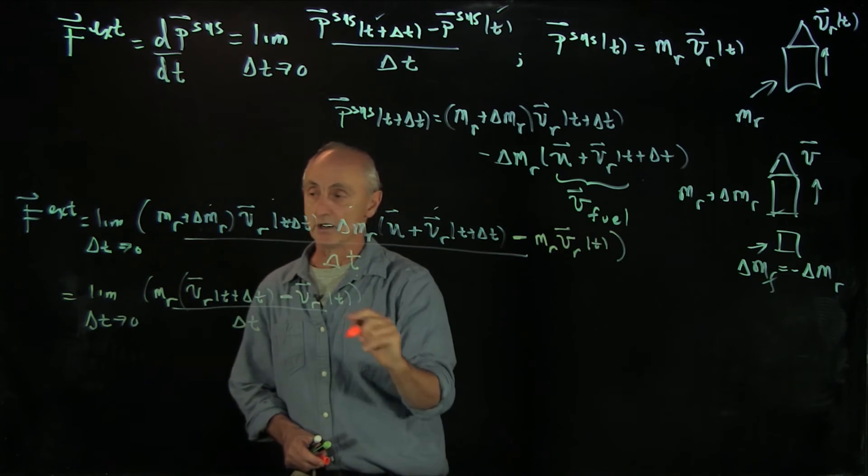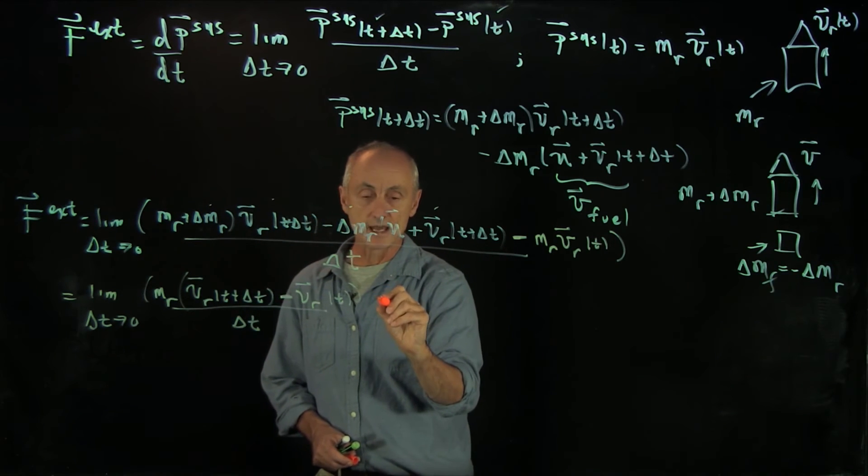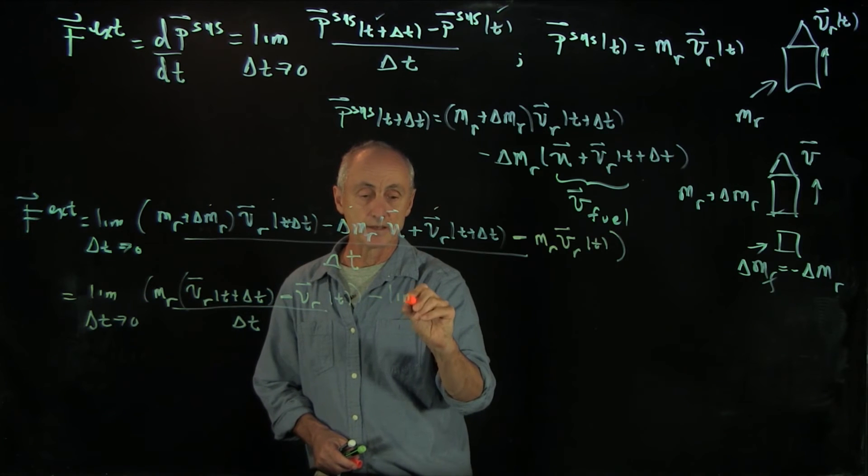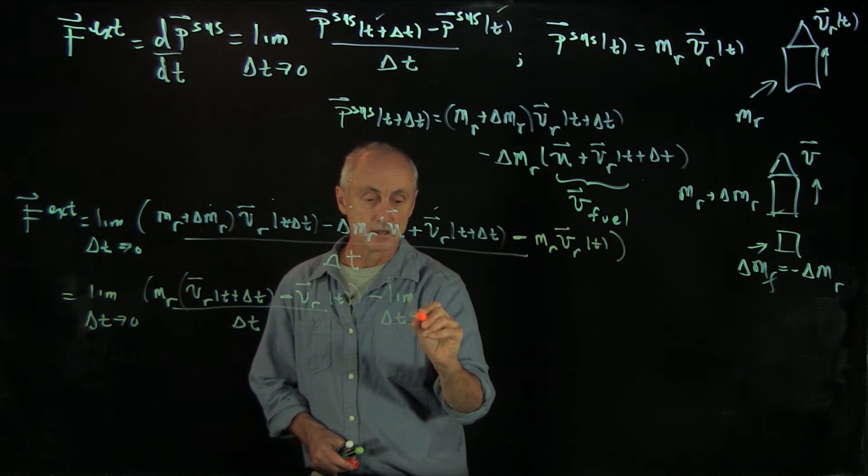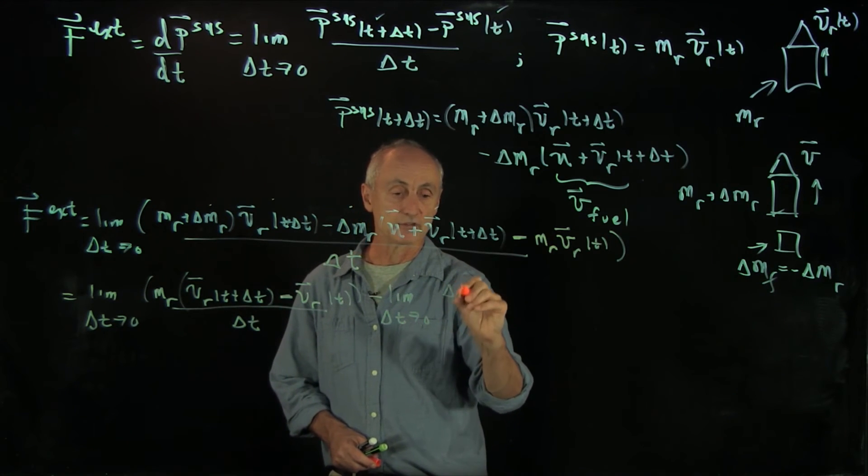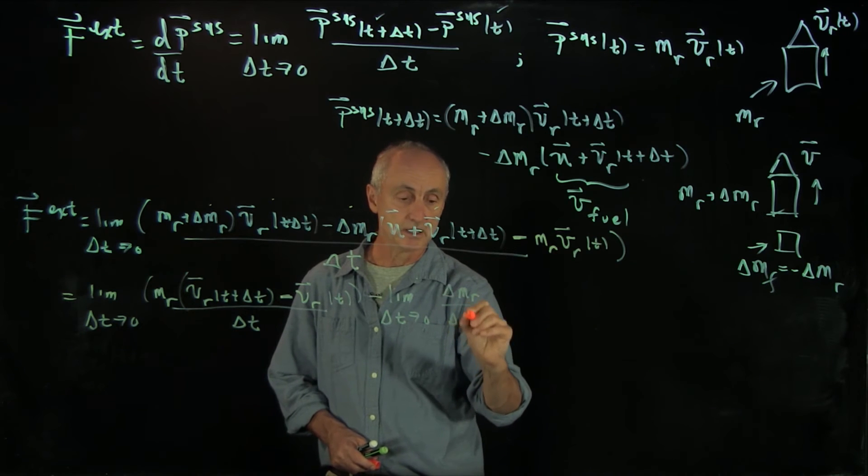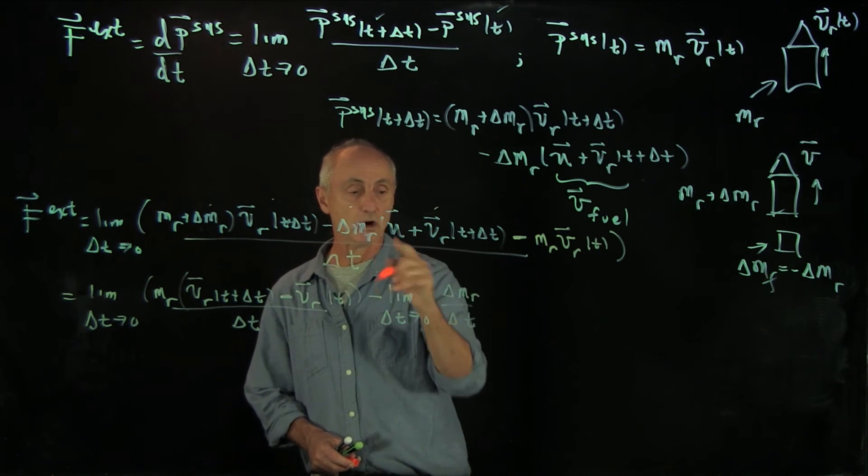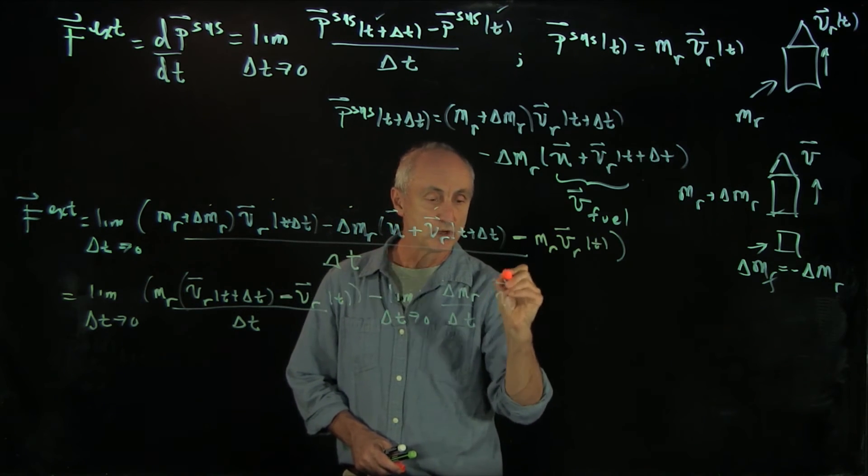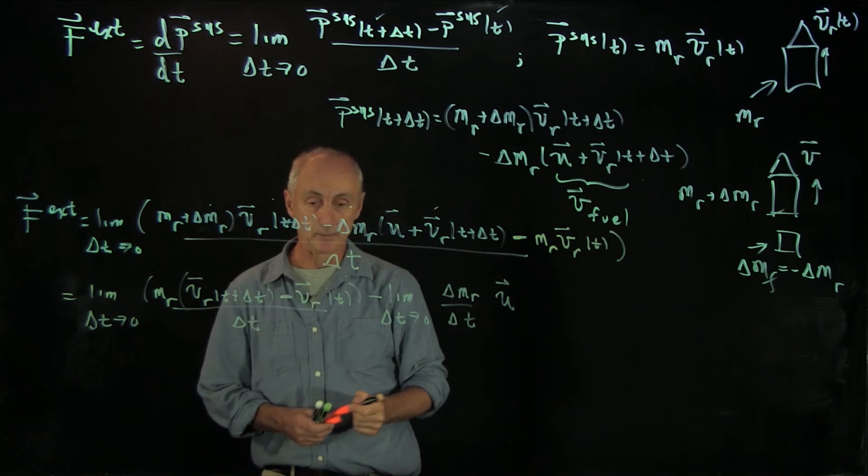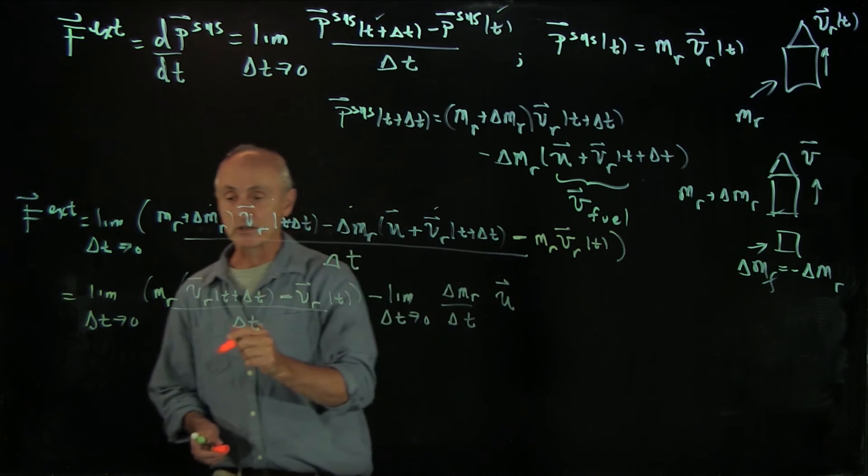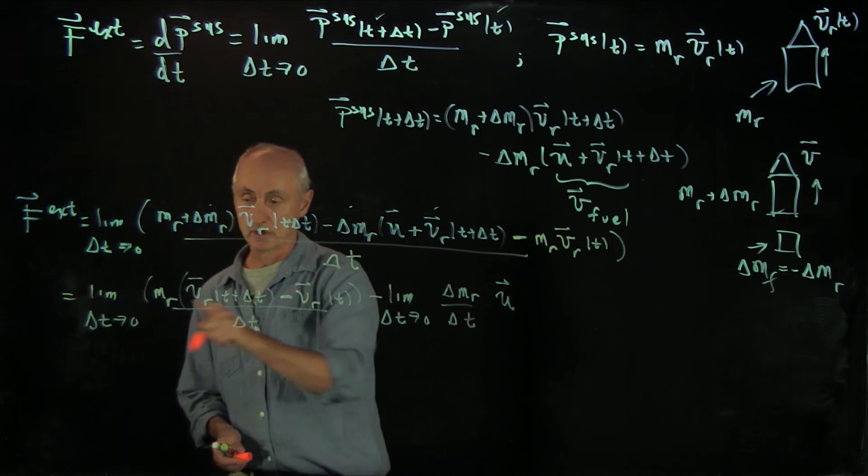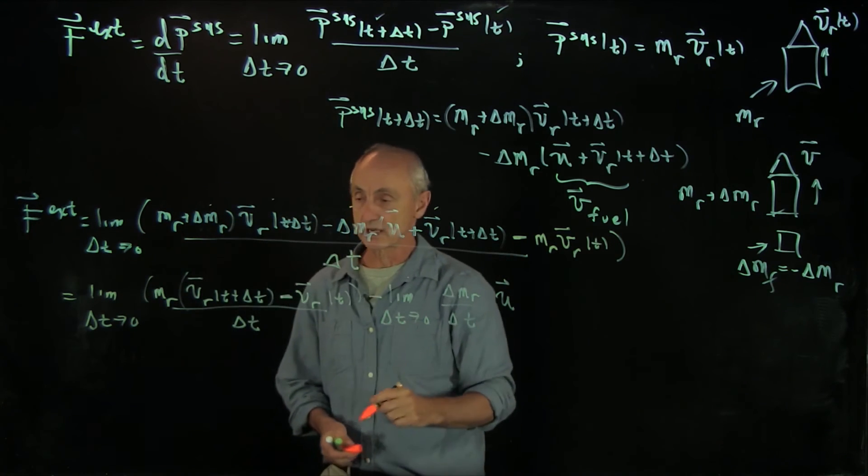And now I have one more term here. And I'm going to write this as minus the limit as delta t goes to 0, of delta mr over delta t. Remember, this term canceled. We only have the speed of the fuel relative to the rocket. And in both cases, this is our first term, and here's our second term.